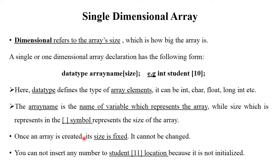Once the array is created, the size is fixed — it cannot be changed. If you want to add or insert an 11th element, it is not possible because array size is fixed. For that purpose, linked list, tree, graph — these types of data structures are used, because they are flexible. Array is constant or fixed size.